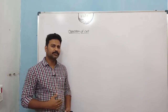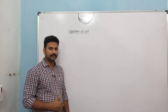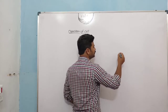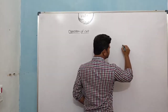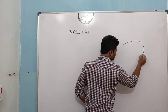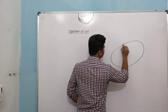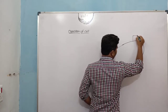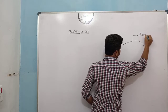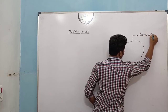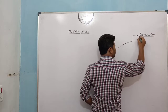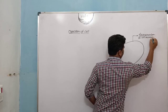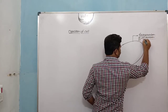Each cell is a structural and functional unit of life, and each cell is bounded by its delimiting structure called the plasma membrane or cell membrane. This particular boundary of the cell is called the plasma membrane, also called the cell membrane or plasmalemma.